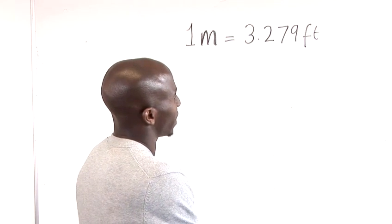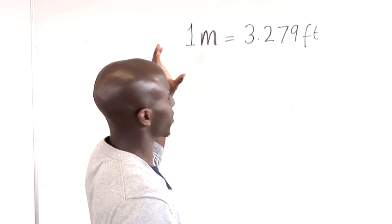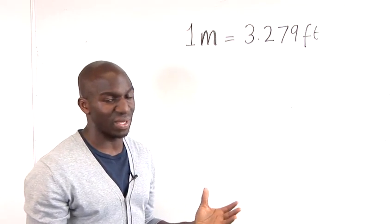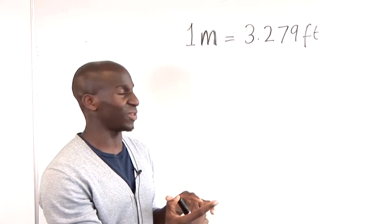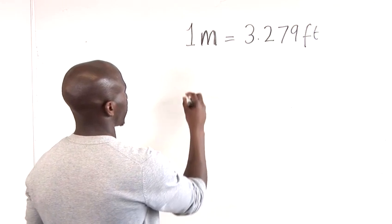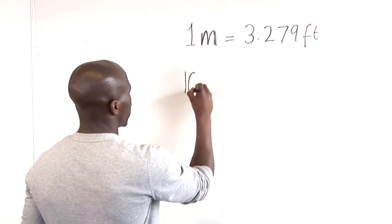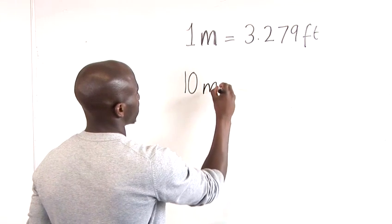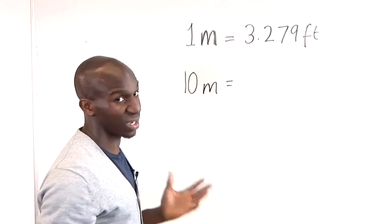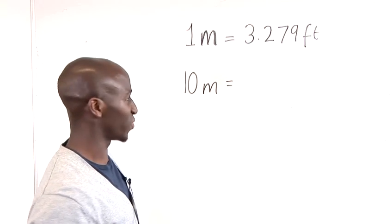So whenever we want to calculate the measurement of feet, we have to look at how many meters we have and then relate that to how many feet that equals. So just imagine if we have a measurement of 10 meters, and that keeps everything nice and simple because whenever multiplying by 10 you have a small rule for that.